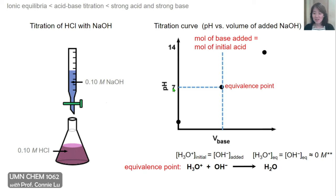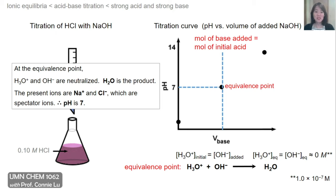At pH 7, we technically have hydronium ions and hydroxide ions at 1×10⁻⁷ molar, but this is a really small number, so we can say those concentrations are approximately zero. At the equivalence point, the hydronium ions and hydroxide are just neutralized and water is the product. Other products present — sodium ions from sodium hydroxide and chloride ions from HCl — are spectator ions that do not change the pH of a water solution.